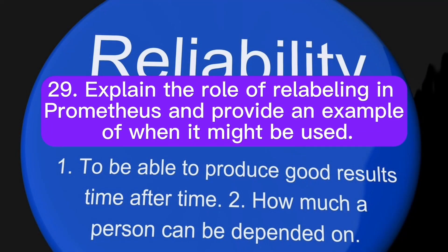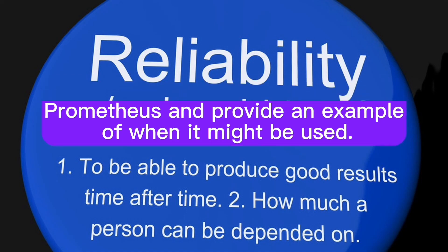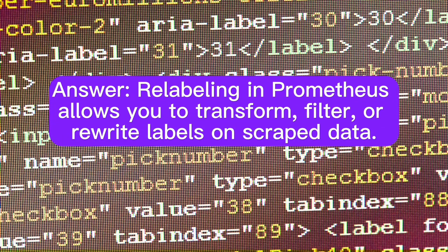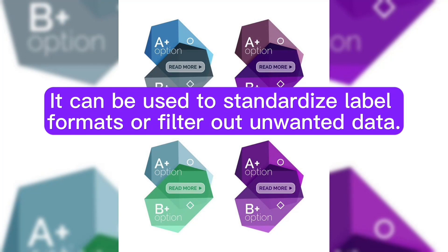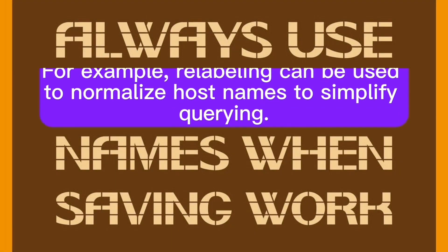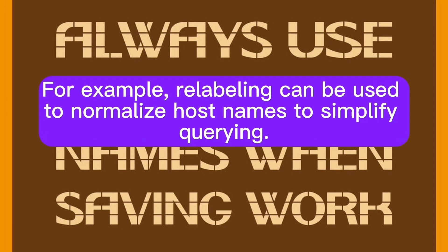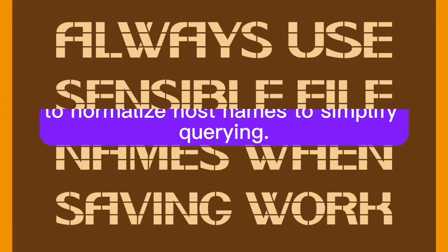Explain the role of relabeling in Prometheus and provide an example of when it might be used. Relabeling in Prometheus allows you to transform, filter, or rewrite labels on scraped data. It can be used to standardize label formats or filter out unwanted data. For example, relabeling can be used to normalize host names to simplify querying.